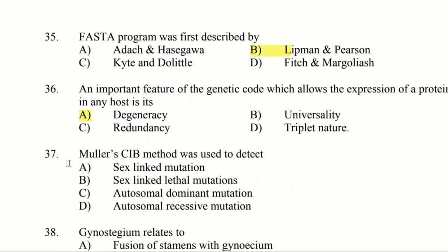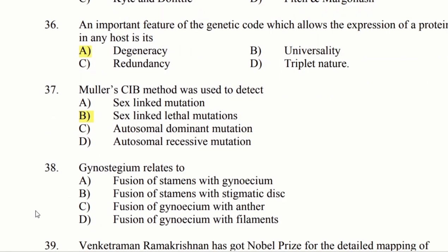Muller's CIB method was used to detect. Option A: sex-linked mutation. Option B: sex-linked lethal mutation. Option C: autosomal dominant mutation. Option D: autosomal recessive mutation. The answer is option B, sex-linked lethal mutation.